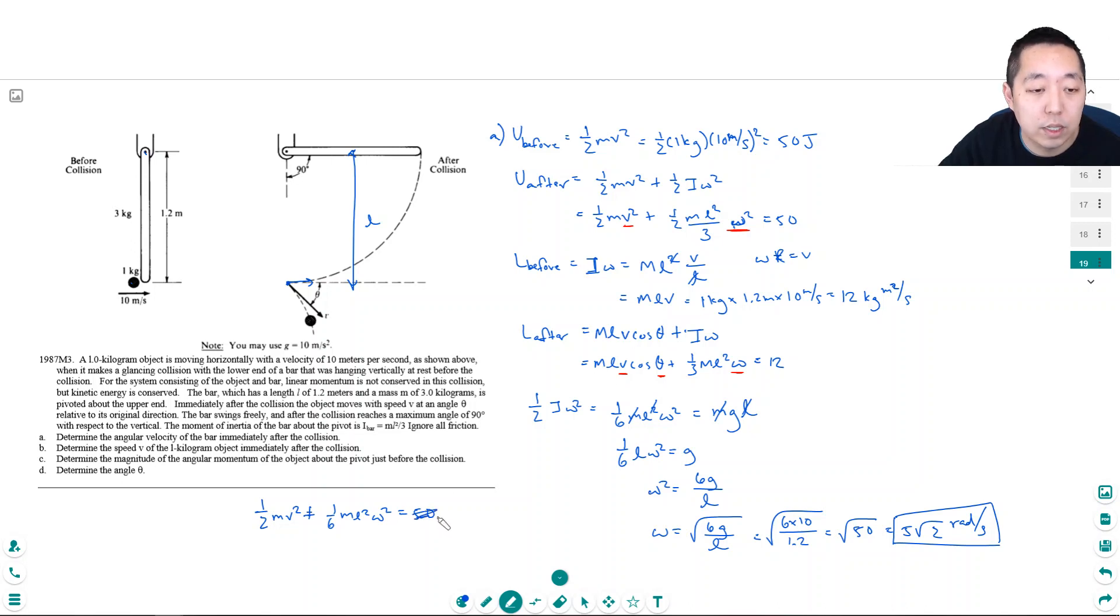If I wanted to be clear, yeah, I have to be a little bit careful. Because these M's are different. This mass and this mass. This is the mass of the ball. This is 1 kilogram and this is 0.3 kilograms. So I have one half times 1 V squared plus 1 sixth times 0.3 times L, which is 1.2 squared times omega squared. Omega was 5 root 2, so I squared it as 50. So that's equal to 50.